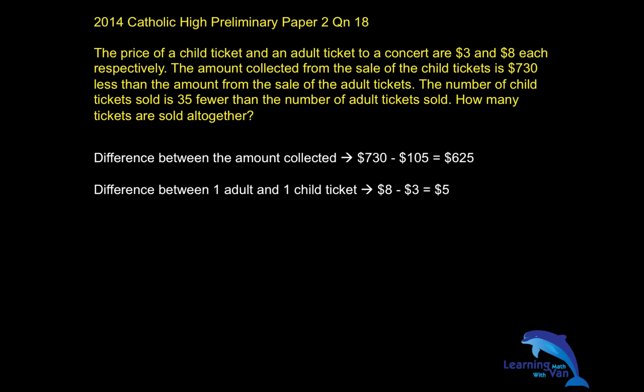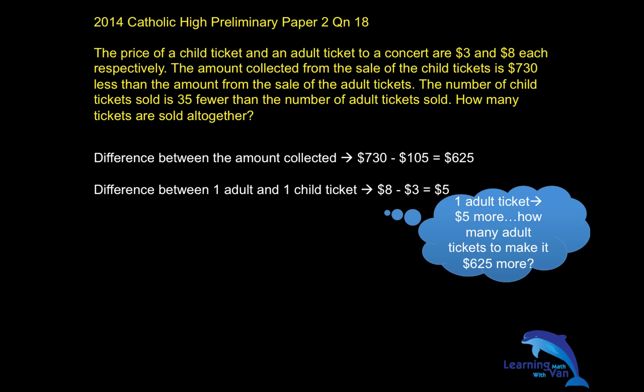Remember, the number of adult and child tickets sold is already made the same, so both have an equal number. For every one group, I have $5 difference. So how do I close up the gap to $625? You use a number sentence — that is why number sentences are so important, because they help us solve a lot of problems and make things easier. You just take $625 divided by 5.